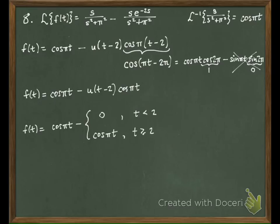This one says, this function right here has a value of cosine pi t all the time, no matter what t is.